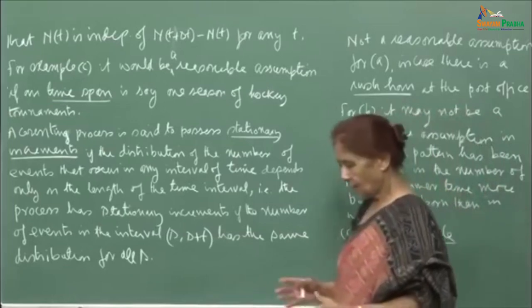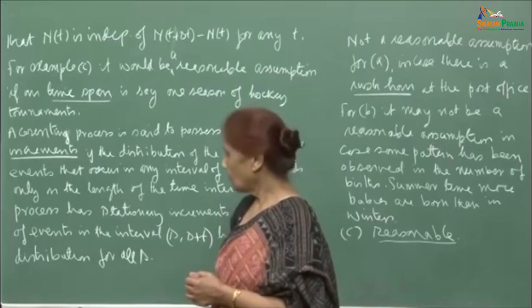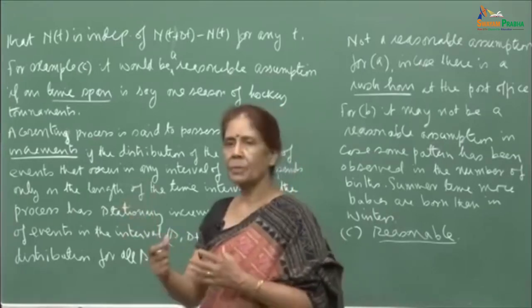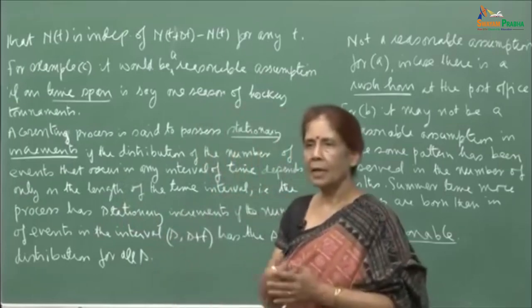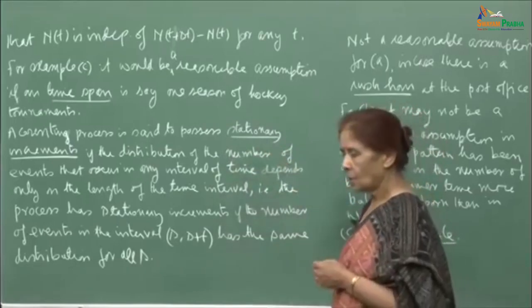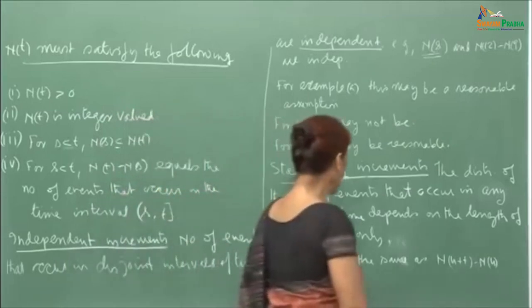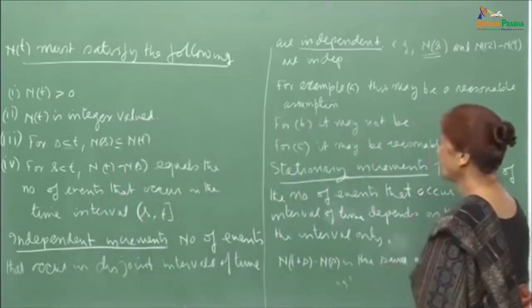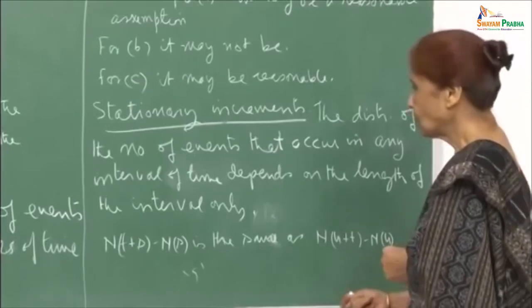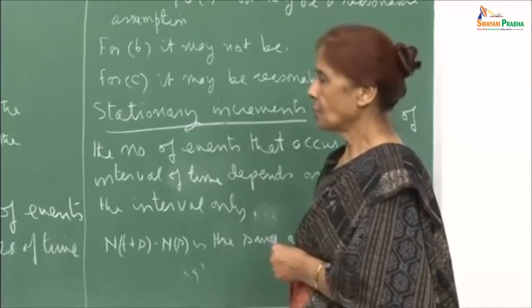What I am trying to say is that before you start modeling a situation with a particular counting process, you have to verify that certain basic assumptions are satisfied. Based on these two assumptions — independent increments and stationary increments — we can now talk about the Poisson process. These are the two basic assumptions under which we will formulate our probabilistic model for the counting process, which we will define as the Poisson process.